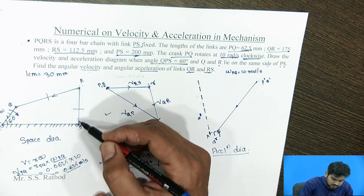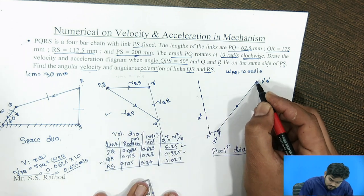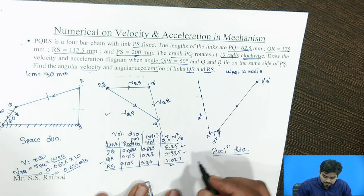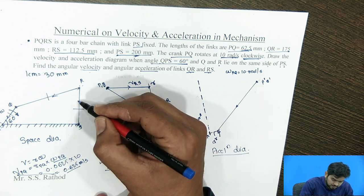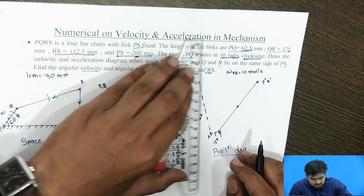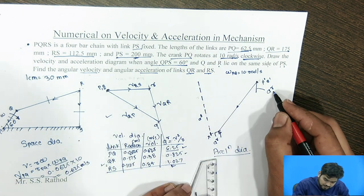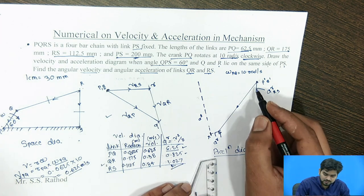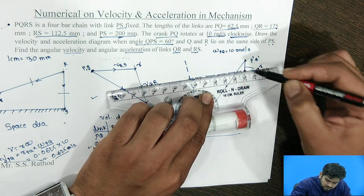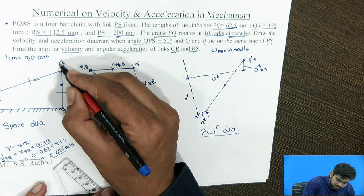Next, consider link RS, which also has two components: radial and tangential. The radial component of RS is 1.027. From point X, we draw the radial component parallel to RS in the downward direction with magnitude 0.127. Perpendicular to this, the tangential component of RS is drawn. The intersection of the two tangential component lines gives us point R'.